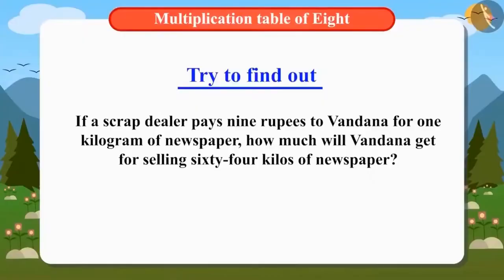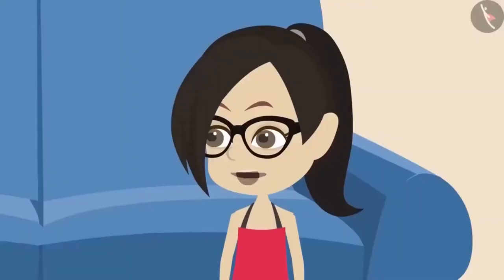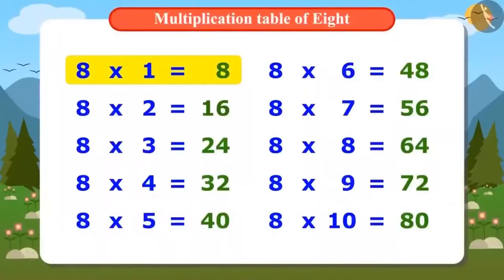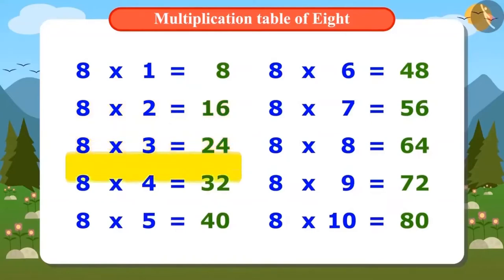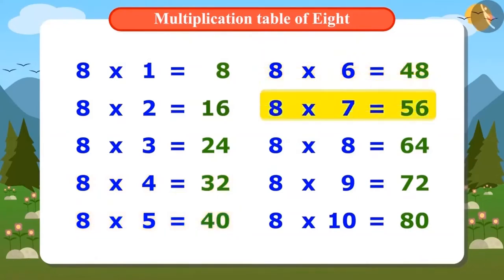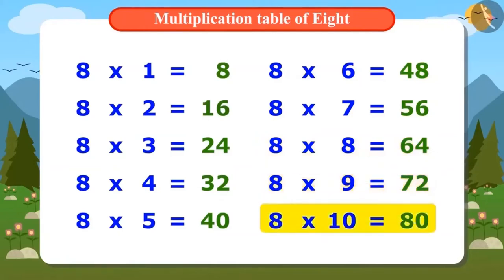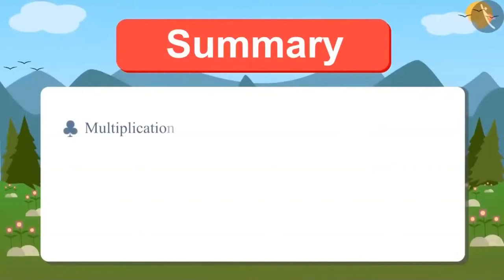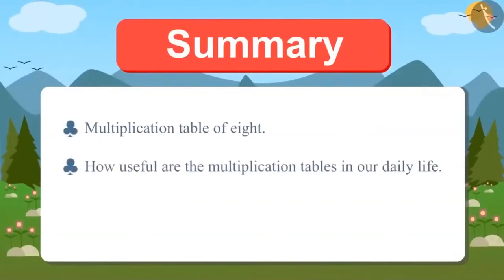If a scrap dealer pays 9 rupees to Vandana for 1 kilogram of newspaper, can you tell me how much will Vandana get for selling 64 kilos of newspaper? We will learn to solve such questions in the next video. Let's memorize the table of 8 for now. Vandana has even started singing: 8×1 is 8, 8×2 is 16, 8×3 is 24, 8×4 is 32, 8×5 is 40, 8×6 is 48, 8×7 is 56, 8×8 is 64, 8×9 is 72, 8×10 is 80. Today we have learned multiplication table of 8 and how useful multiplication tables are in our daily life.